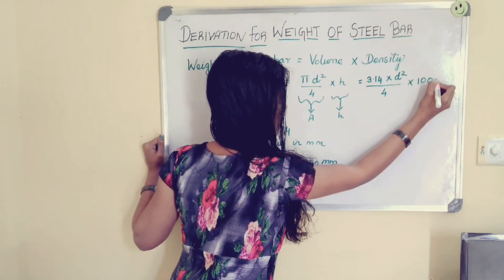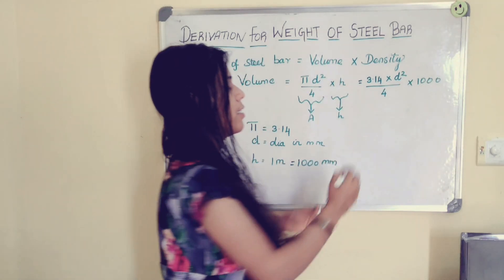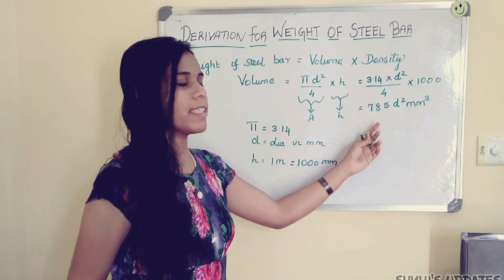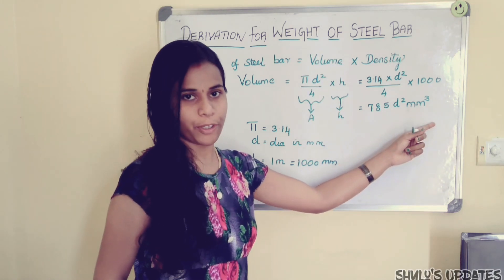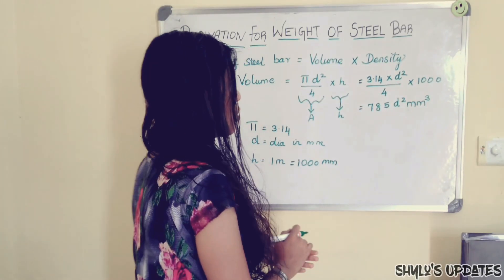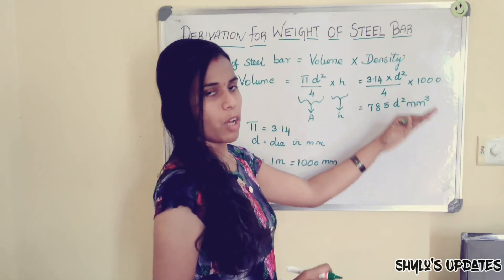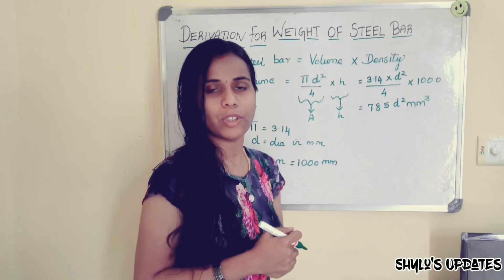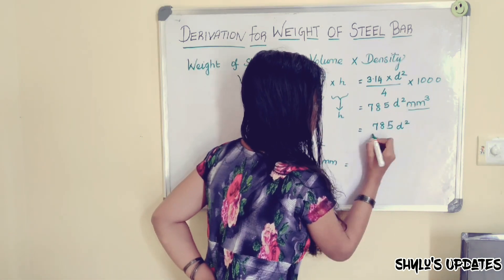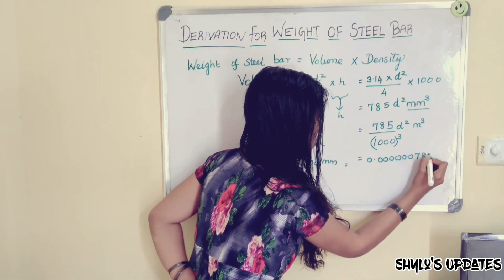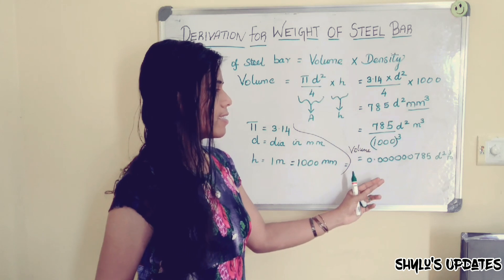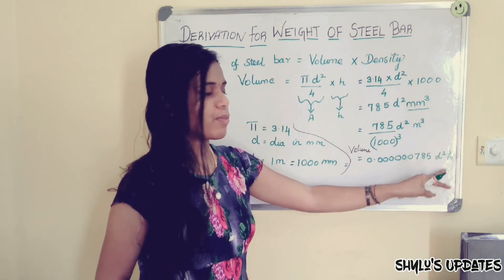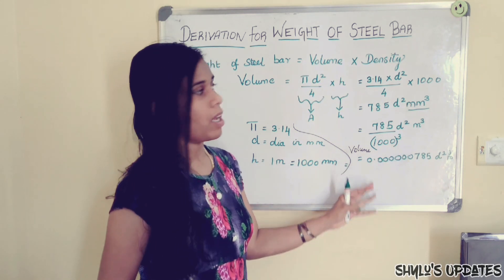Now substituting these values into the volume formula, we get the answer: 785 D square mm cube. So this is in mm cube. Now we are going to convert this mm cube into meter cube. When we solve this we get the answer 0.000785 D square meter cube. So this is the volume.